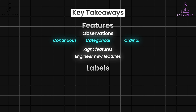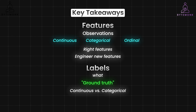Speaking of labels: they represent the target outcome, or what you want your model to predict, and provide the ground truth during the supervised learning process. The type of label — continuous or categorical — determines whether your problem is a regression task or a classification task. Ordinal labels introduce an element of ranking into categorical classification tasks. In essence, features provide the model with the information it needs to learn, while labels guide the model towards the specific prediction you want it to make. By understanding features, labels, and their role in machine learning, you can build better models for tasks like real estate price prediction.